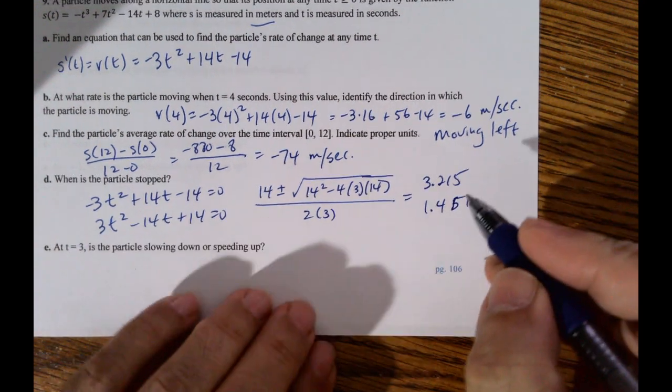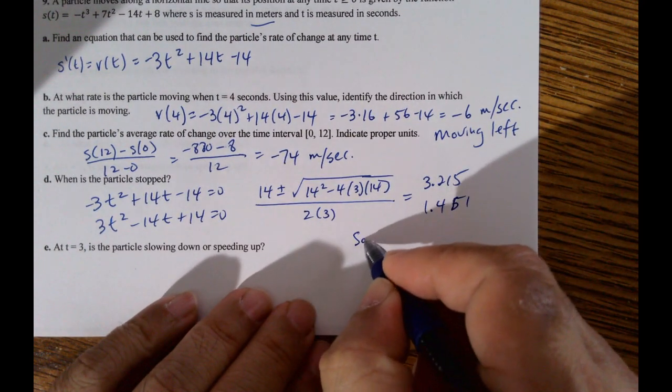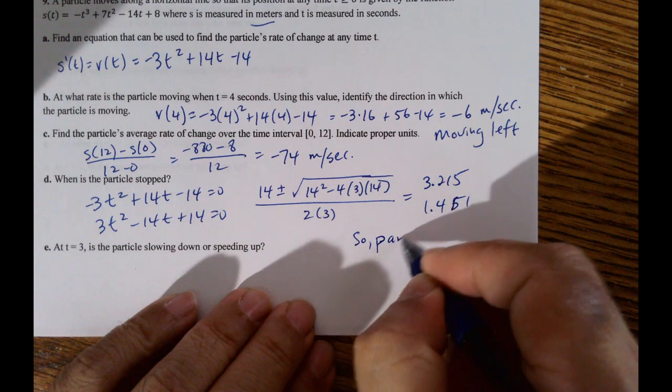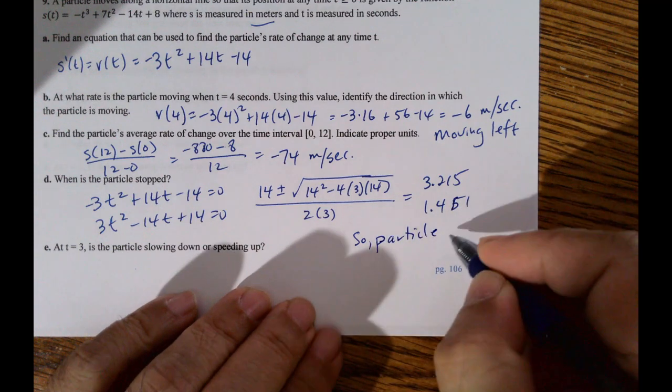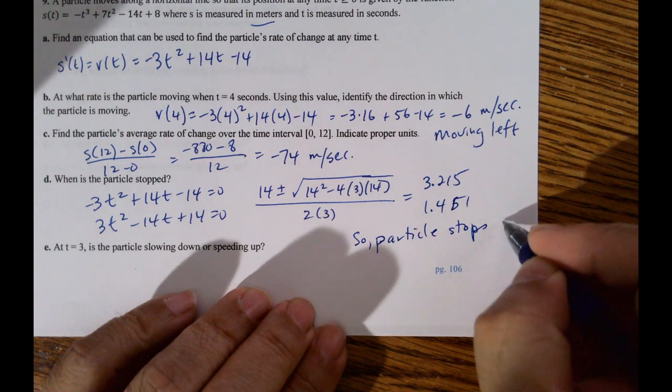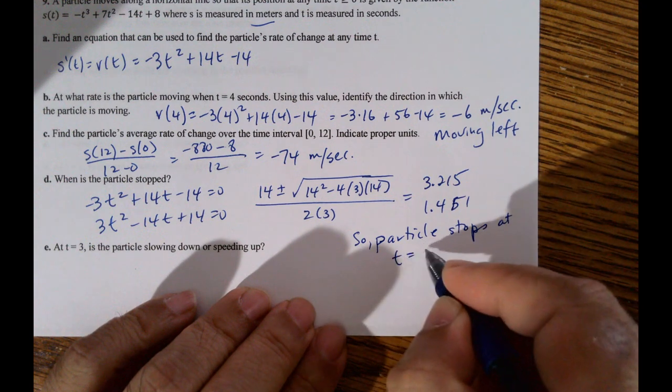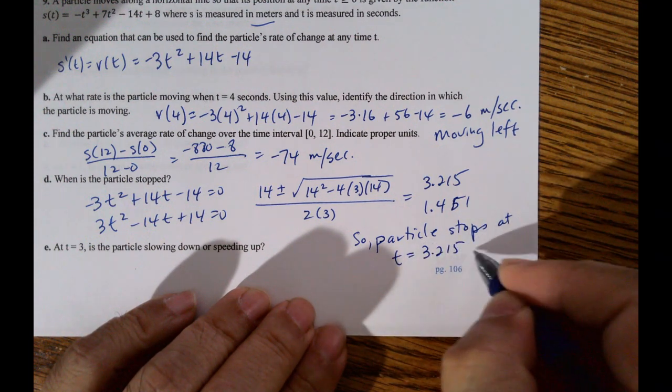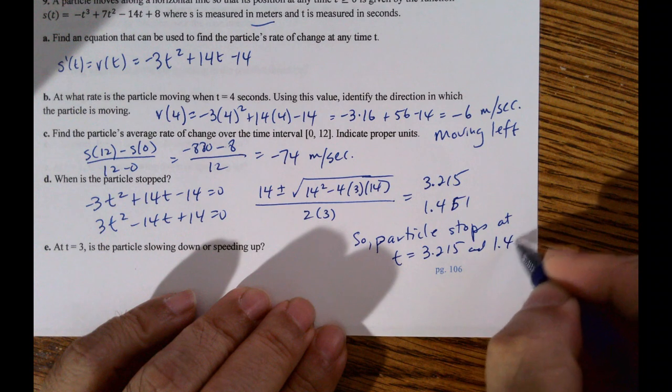So, particle stops at t equals 3.215 and 1.451.